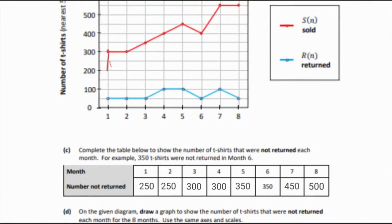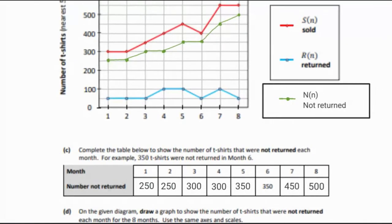Now we need to draw a graph with these values, because these are the numbers which are not returned. Get a different color and we're going to put in all these values on the same graph. We can see it is increasing as we go. Use a different color and put your key over here so the corrector can see.